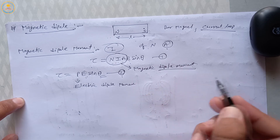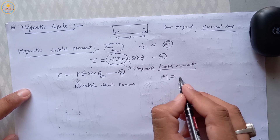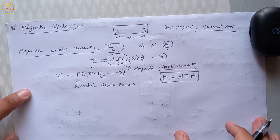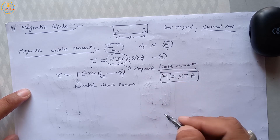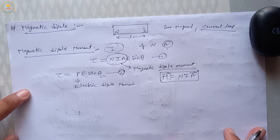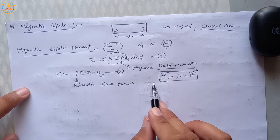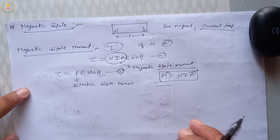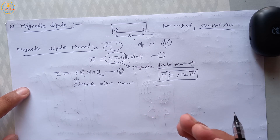Magnetic dipole moment, represented by capital M, for a coil equals NiA. This is a vector quantity. In vector form, M vector equals NiA vector. The direction of this magnetic dipole moment is along the axis of the magnetic dipole, or perpendicular to the plane of the current loop.